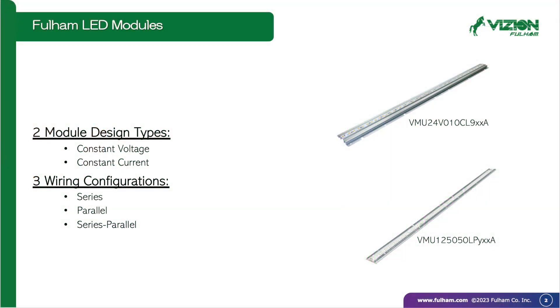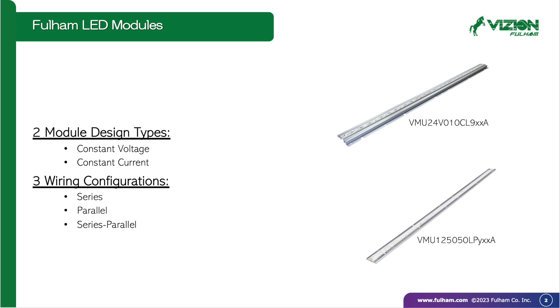There are two types of modules, either constant voltage or constant current, along with these two module types. There are three ways for them to be wired. They can be wired in either series, parallel, or series-parallel configuration.